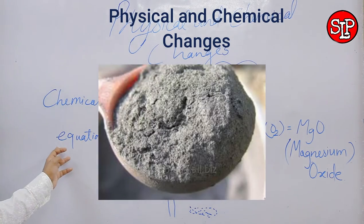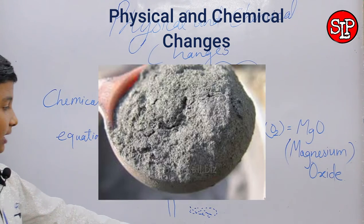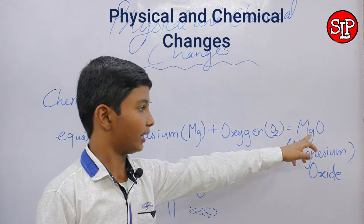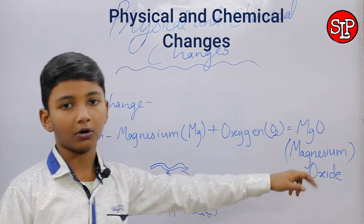Then the equation of this example is magnesium Mg plus oxygen O2 is equal to MgO, magnesium oxide.